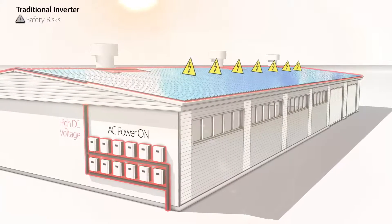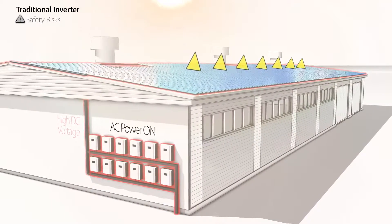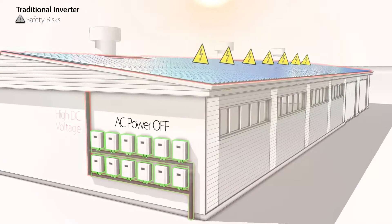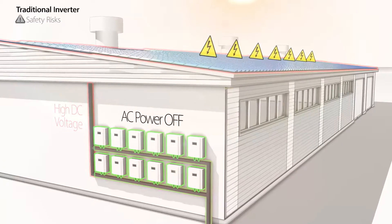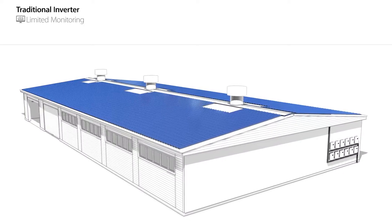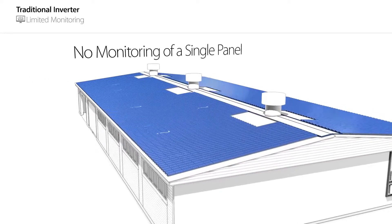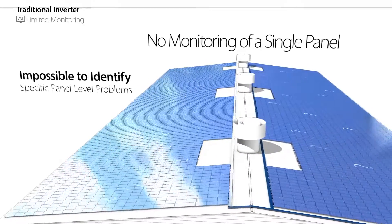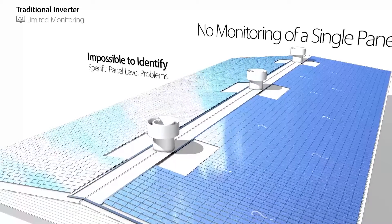A third drawback is safety issues. The DC cables that connect the panels to a string carry high voltage as long as the sun is shining. The traditional inverter cannot shut down the DC voltage of the panels, and therefore there are serious associated risks for installers and firefighters. And lastly, a traditional system cannot track power output, temperature, or any other parameter of a single panel, making it impossible to identify specific panel-level problems remotely.